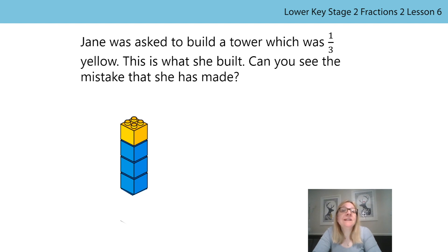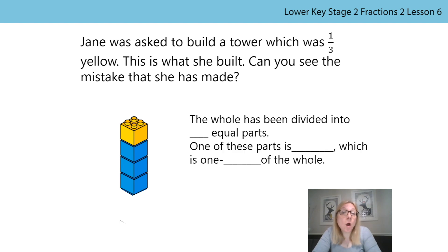Jane had used an additional three bricks, rather than including the yellow in the whole. In Jane's model, the whole had been divided into four equal parts. One of these parts is yellow, which is one-quarter of the whole. For her model to represent the yellow as one-third, the whole needs to be divided into three equal parts, and so Jane needs to remove one of the blue bricks. Brilliant work if you were able to spot Jane's mistake.